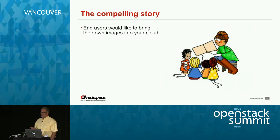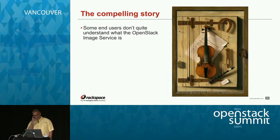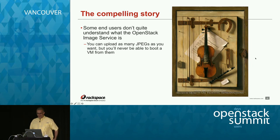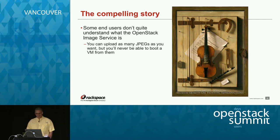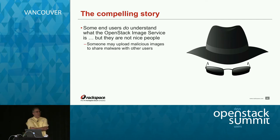Here's the compelling story: end users would like to bring their own images into your cloud. There are a few complications. Some end users don't quite understand what the OpenStack image service is — this actually happened to me at Rackspace when someone who applied for early access to Cloud Images said 'I don't need to do this, I wanted to store some JPEGs.' You just never know what you're going to get. Some end users do understand what the image service is about, and they just happen to not be nice people.